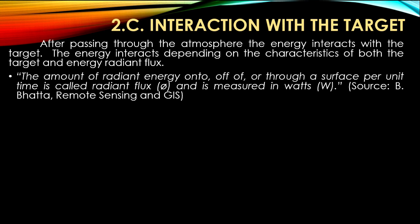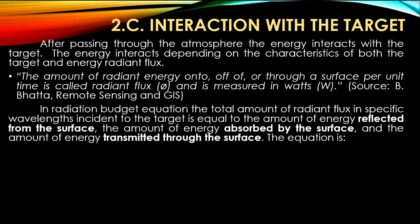Radiant flux: as per the definition of B. Votto from remote sensing and GIS books, the amount of radiant energy on, off, or through a surface per unit time is called radiant flux, and is measured in watts. In the radiation budget equation, the total amount of radiant flux at a specific wavelength incident to the target is equal